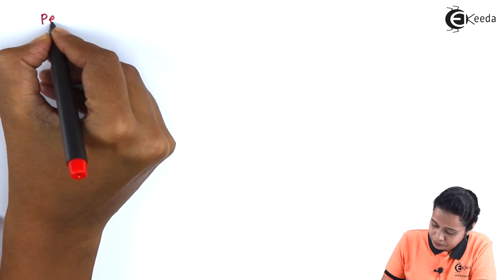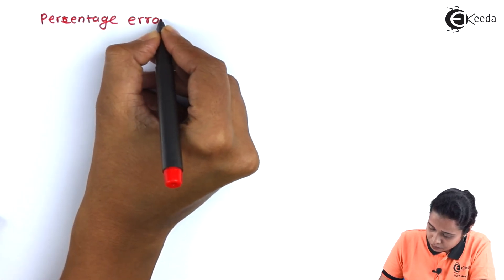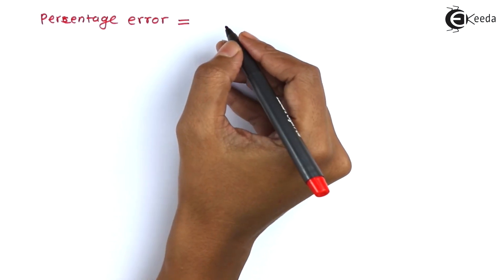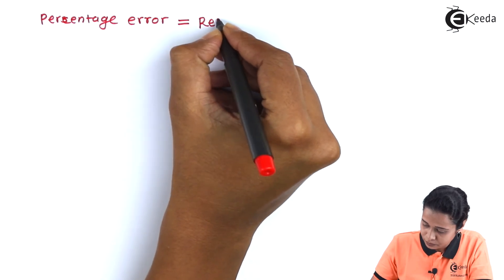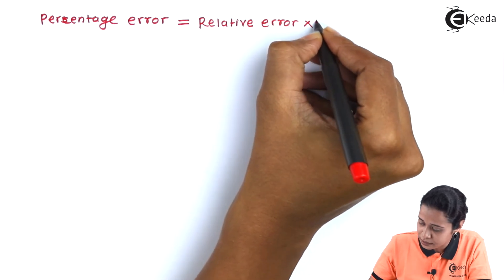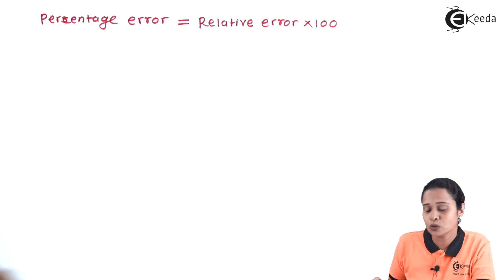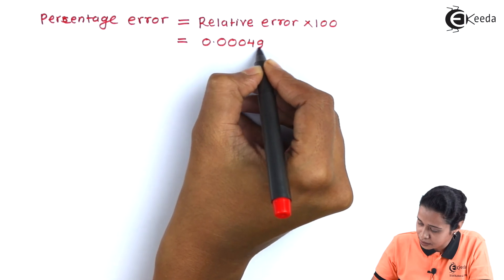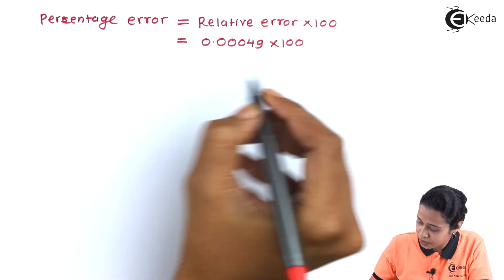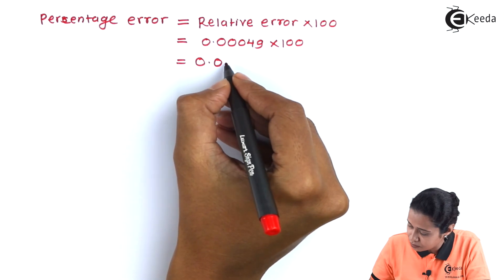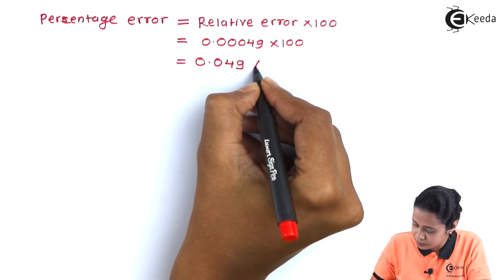The next and last step is finding the percentage error. We express the relative error as a percentage by multiplying by 100. The value of our relative error is 0.00049 multiplied by 100, which gives 0.049 — so the percentage error is 0.49%.